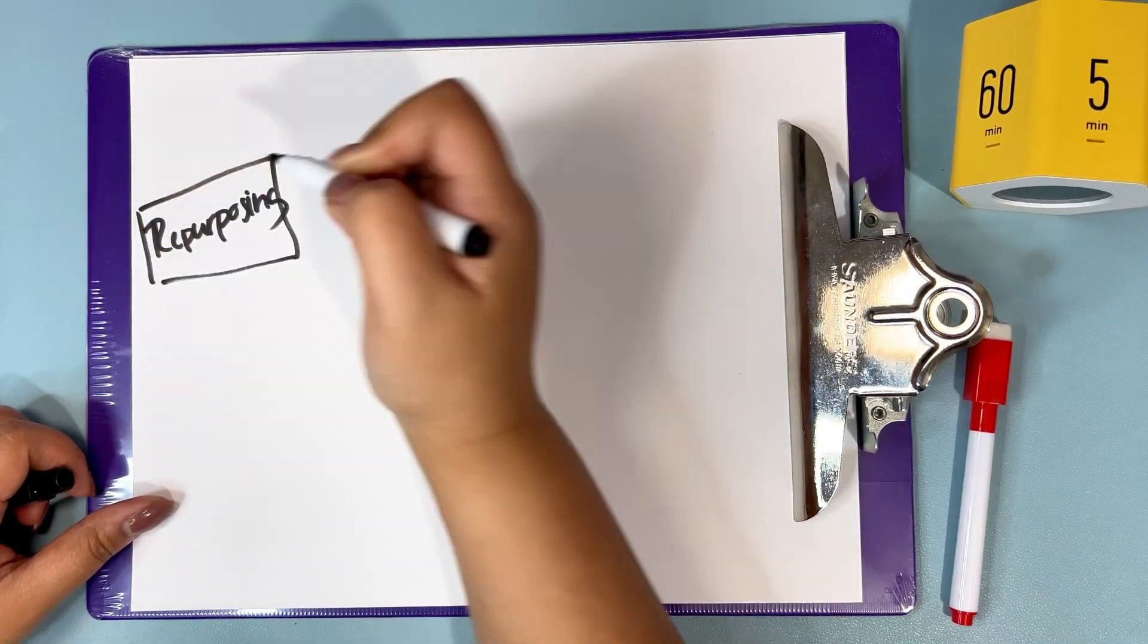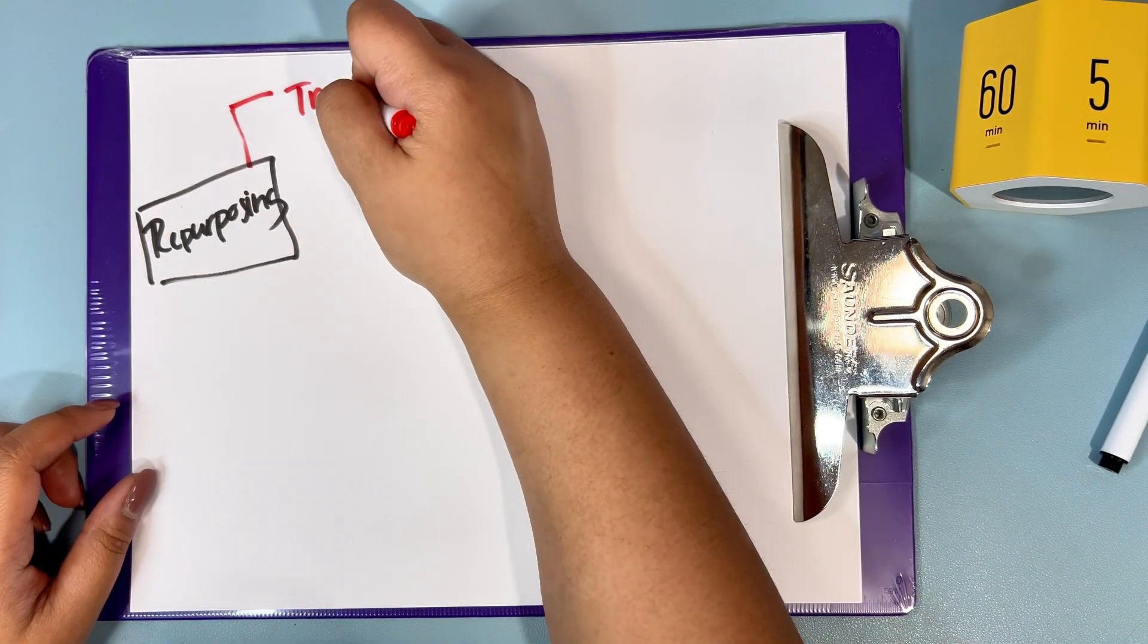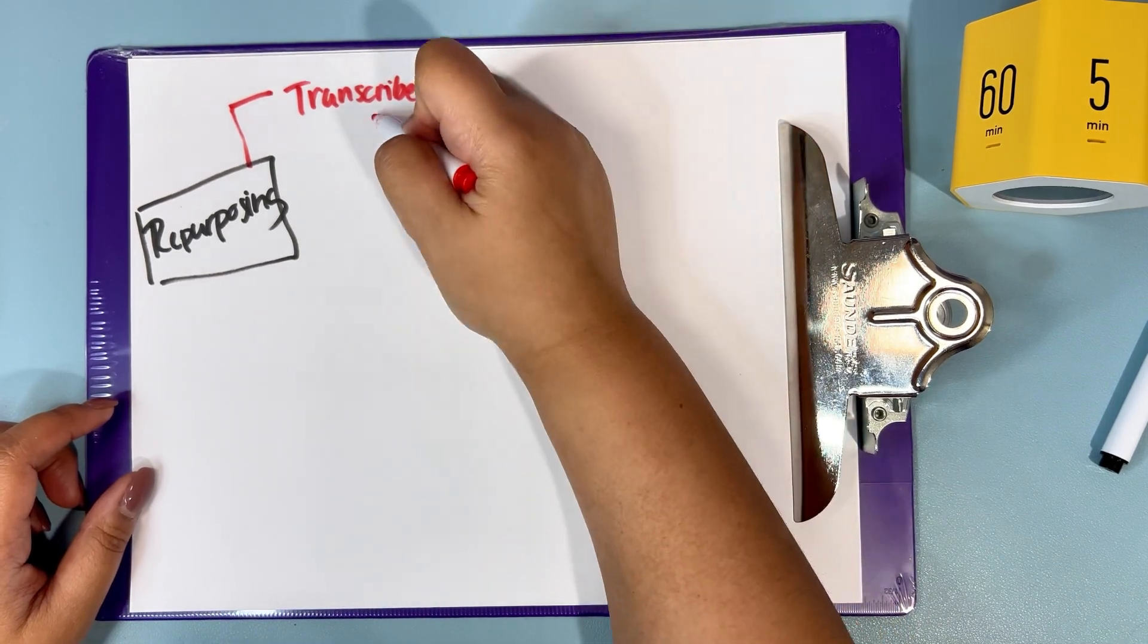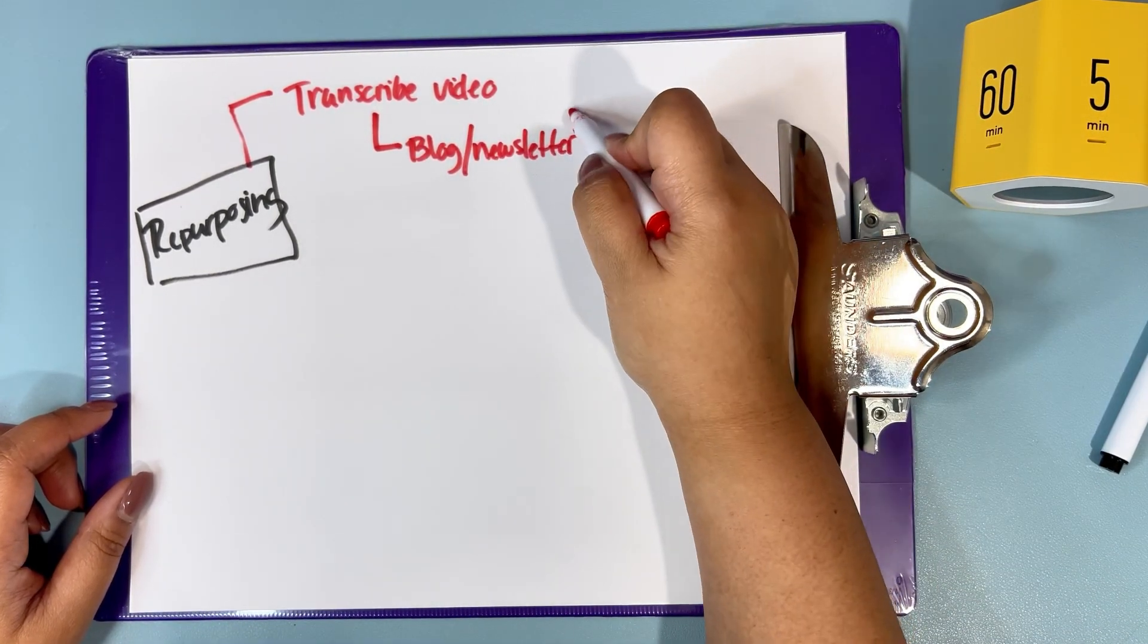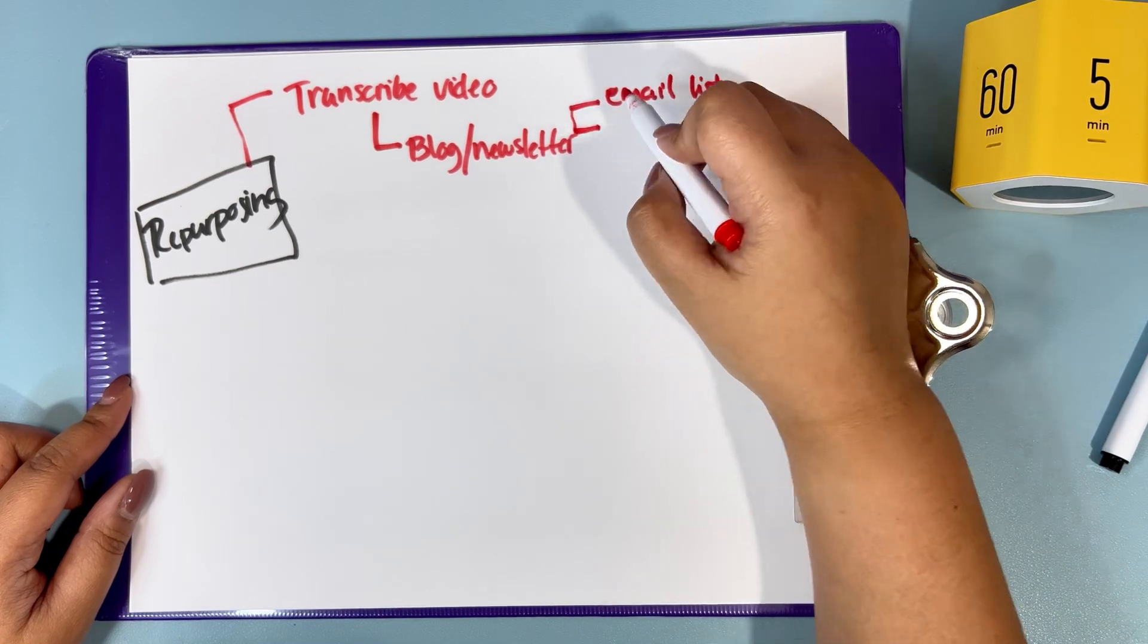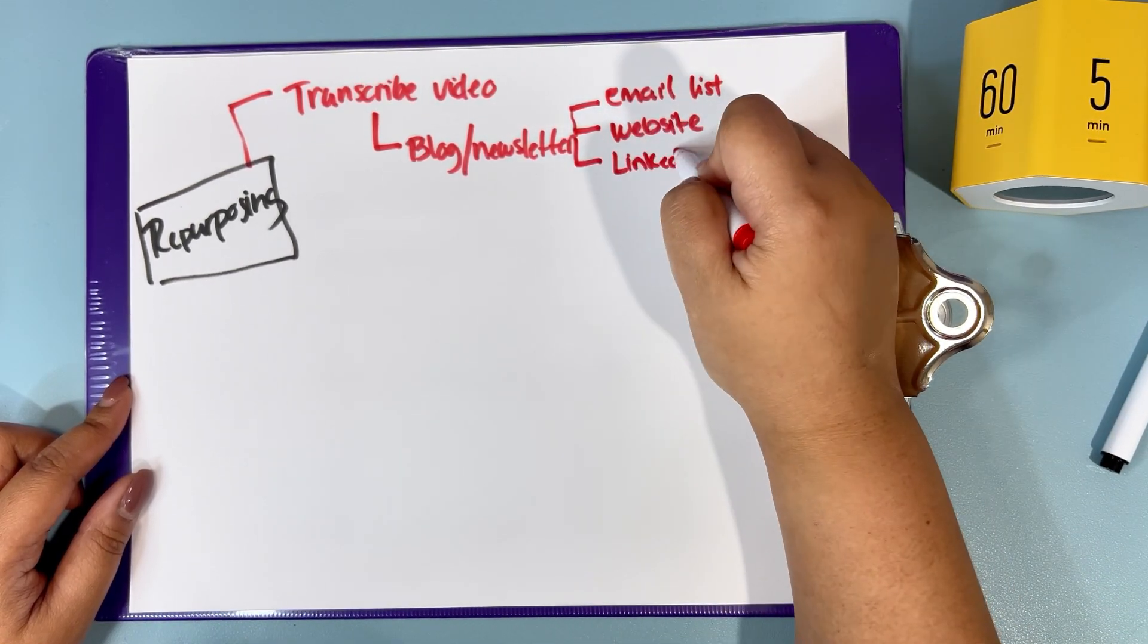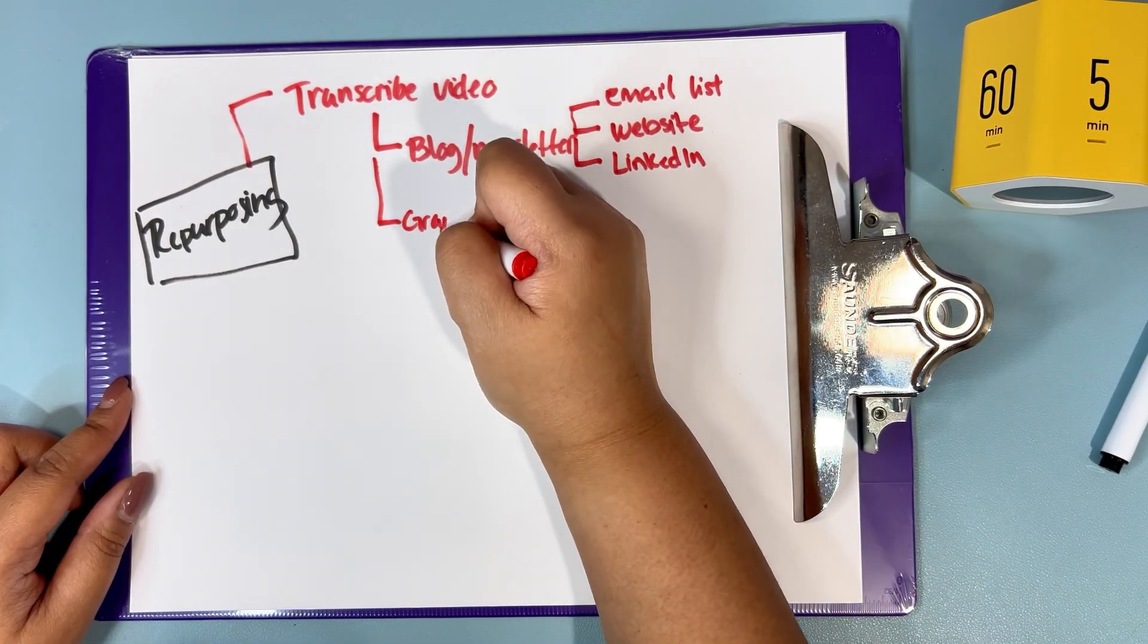Let's talk about repurposing. This means taking your YouTube video and changing it into a different content format. For example, transcribe the audio from your video and turn it into a blog or a newsletter where you can send it to your email list or post it on your website or LinkedIn.